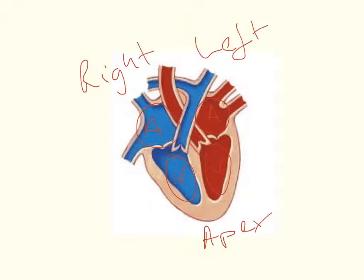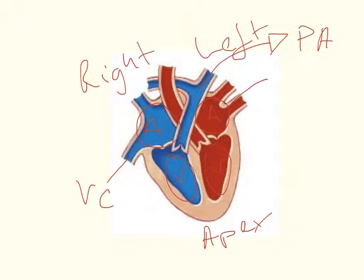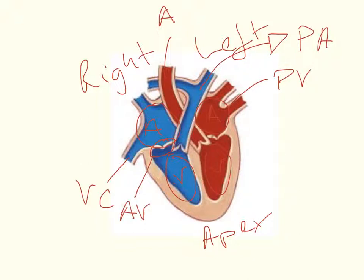The main blood vessel leading into the heart is the vena cava. The blood vessel leading away to the lungs is the pulmonary artery. Coming back from the lungs you have the pulmonary vein, and leading away to the rest of the body you have the aorta. In between the atrium and the ventricle you have the atrioventricular valves on both sides, and inside the pulmonary artery and the aorta you have the semilunar valves.